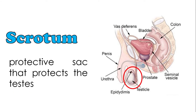The scrotum is the protective sac that protects the testes. This external organ with a sac-like structure is what we call the scrotum. Inside the scrotum, we can find the testicles or testes.